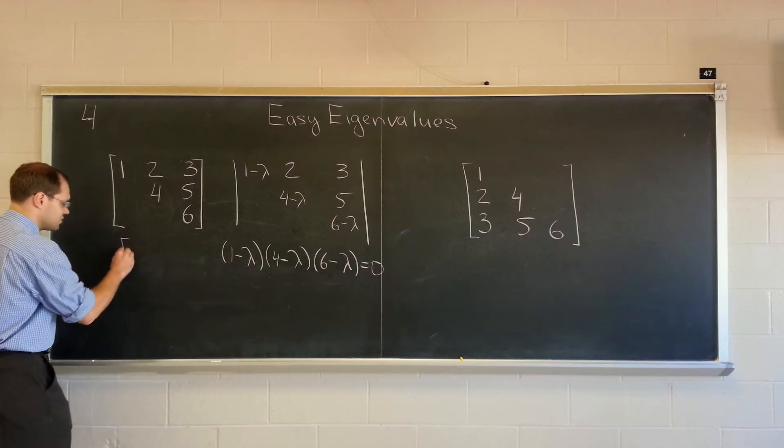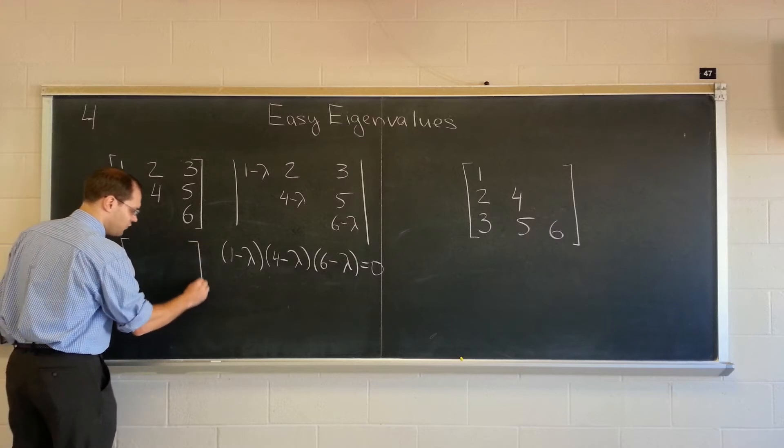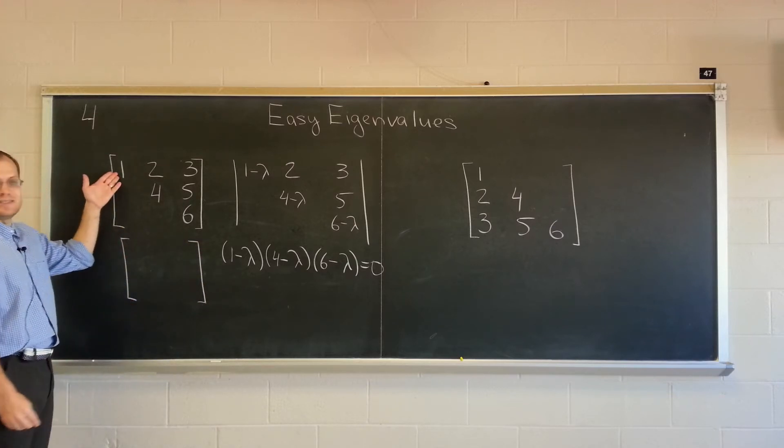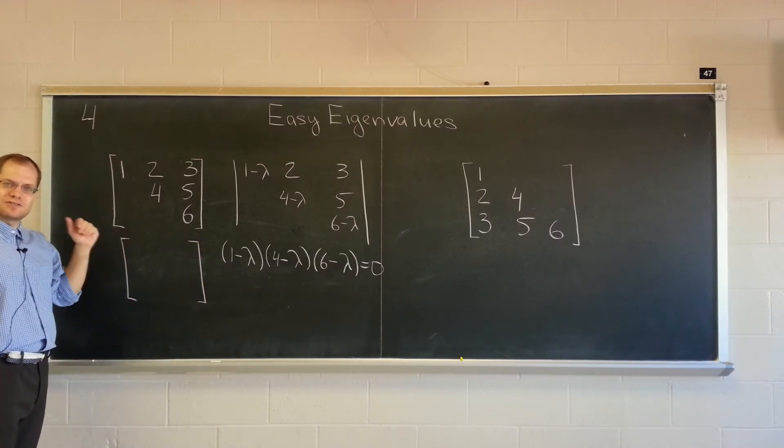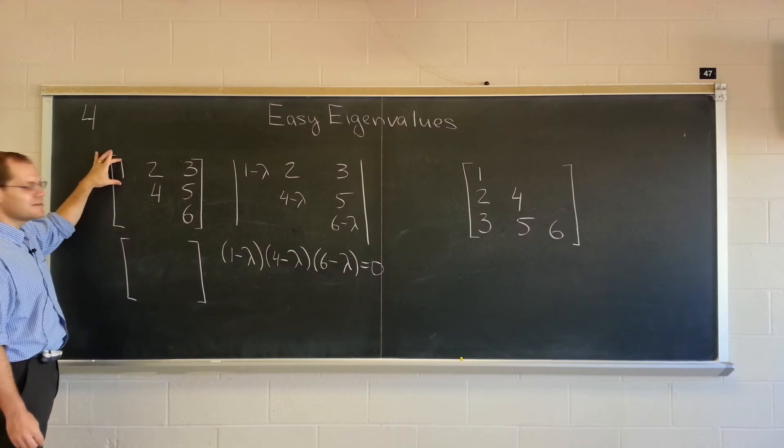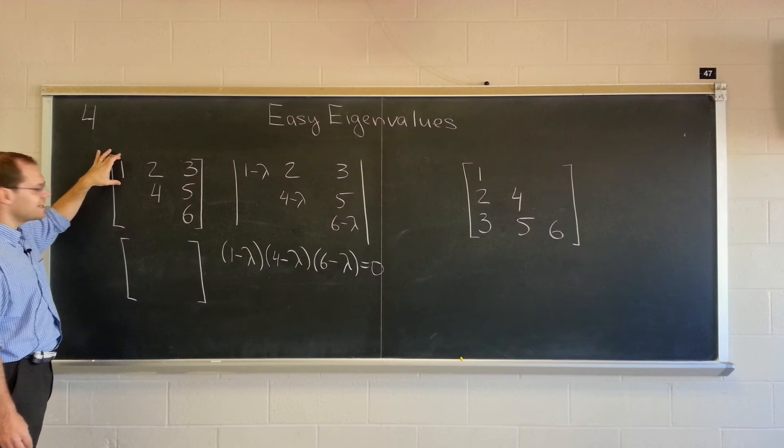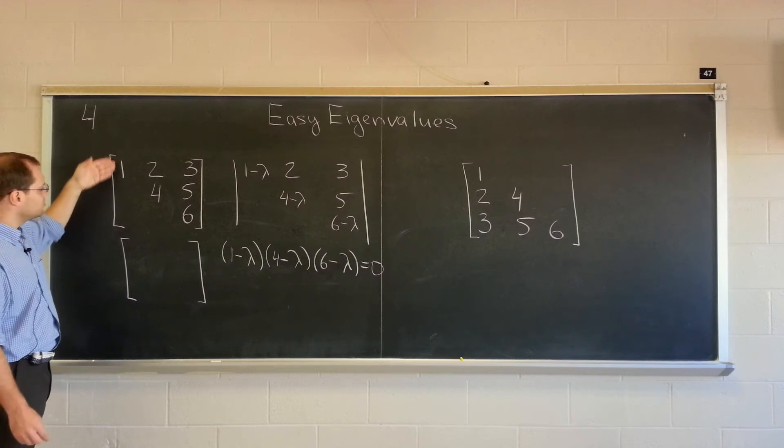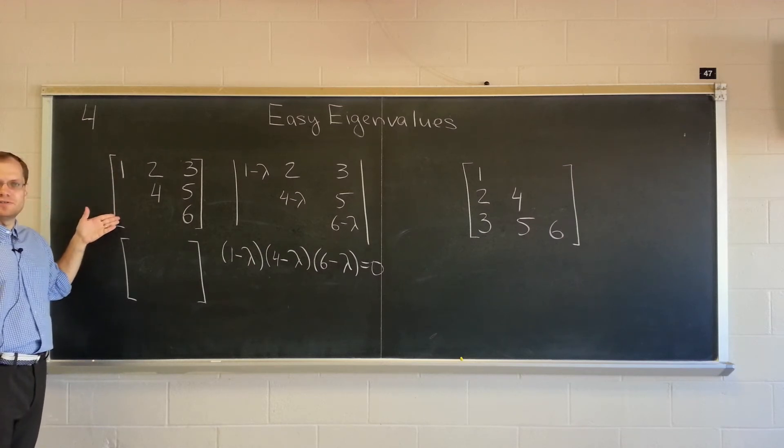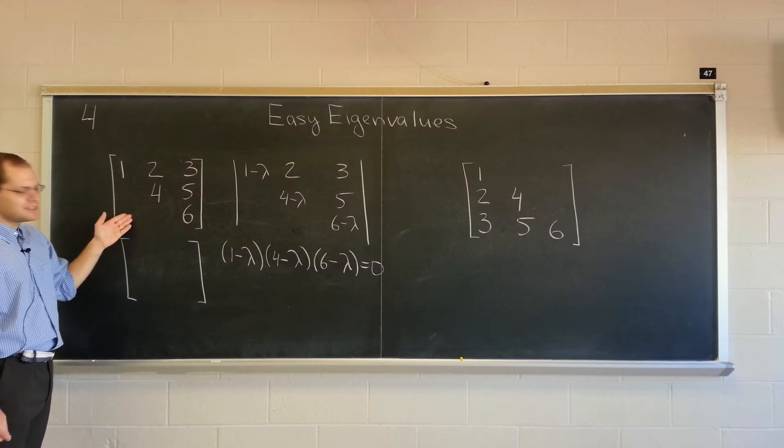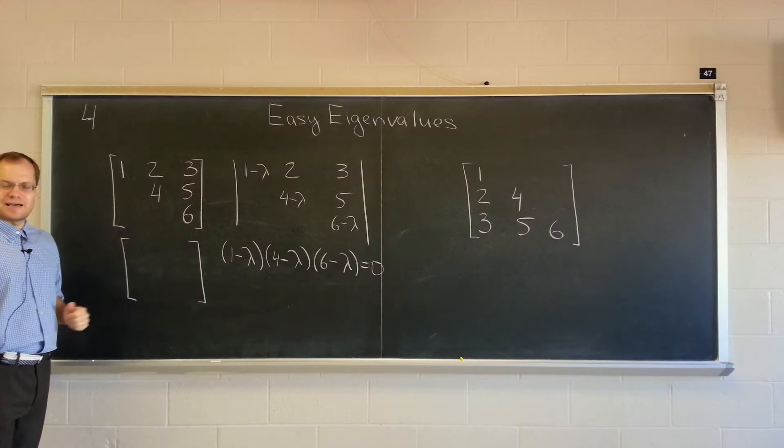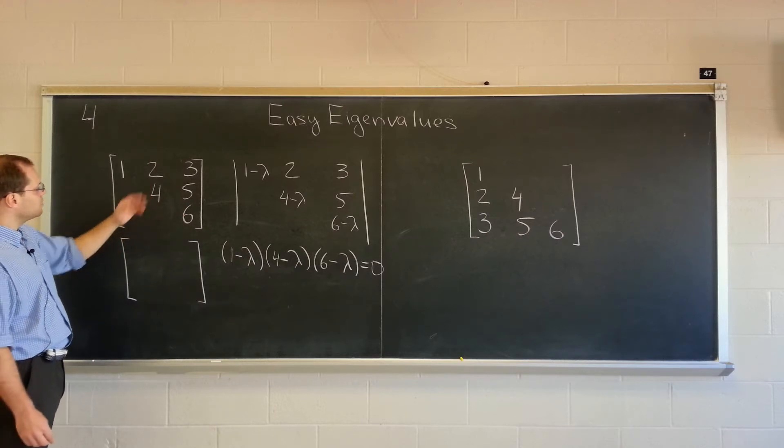So to find an eigenvector corresponding to four, one is easy because that's one of the features, that's the first feature. A single number on the diagonal, a single number in its column, and it happens to be on the diagonal. So the corresponding eigenvalue is one, zero, zero. Six is the same feature, but you don't know the eigenvector anyway. So we'll focus on four.